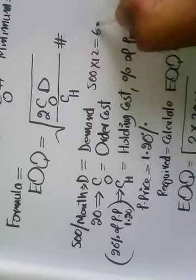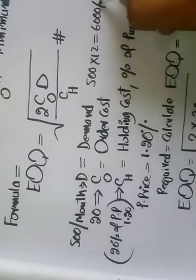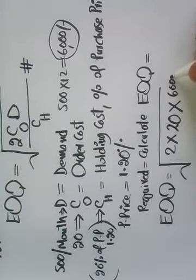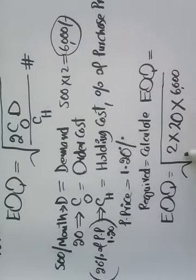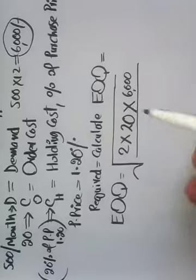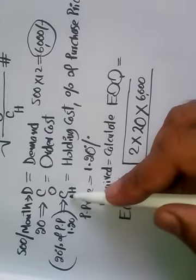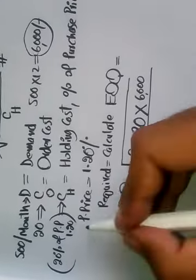Is equal to total demand for the year is 6000. Total demand is 6000. And then C of H cost of holding, holding cost is, purchase price is 1.20, purchase price is 1.20, so holding cost is 20 percent.